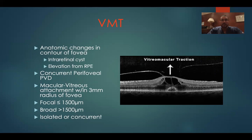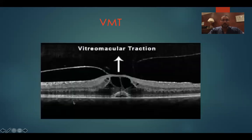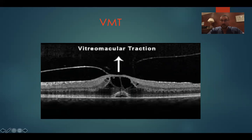With VMT, you can get intraretinal cysts, as we see here, elevation from the RPE, and a concurrent perifoveal posterior vitreous detachment — that's what typifies vitromacular traction. Once again, it can be focal or broad, isolated or concurrent, as with VMA. You can see how these patients, as opposed to those with VMA, are going to be symptomatic. It would be very unusual for a patient to present with this OCT and not have symptoms.